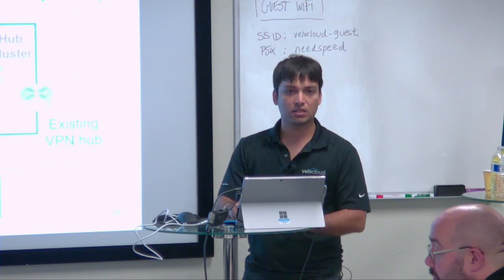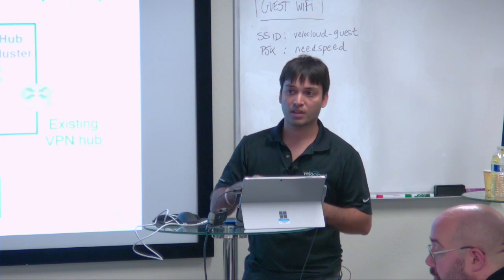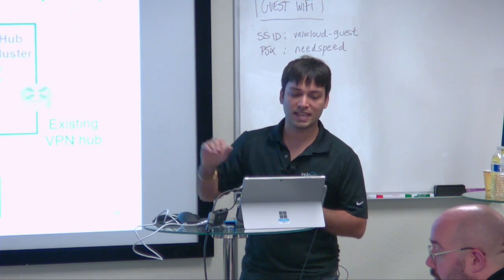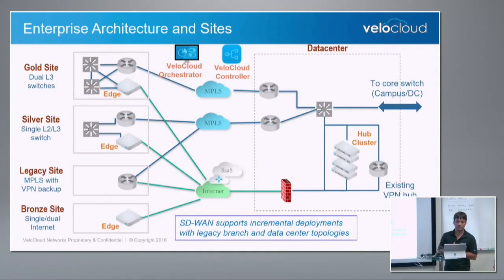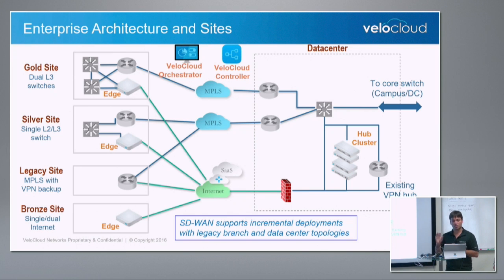At a very high level, this is covering the various site types. There is a gold site which is full HA, with a VeloCloud H deployed there. There's a silver site, a legacy site, and a bronze site. The gold site is full HA redundant and can have one or two VeloCloud devices. The silver site is typically a hybrid site. The legacy site has no VeloCloud, and the bronze site has internet only. The orchestrator and controller can be consumed as a service or completely on premise.